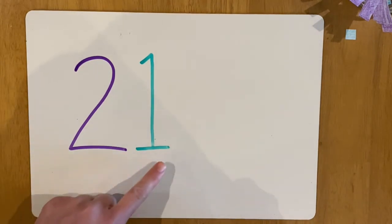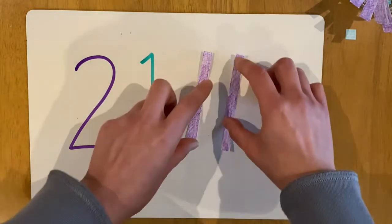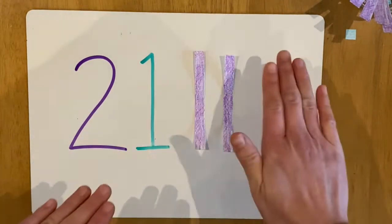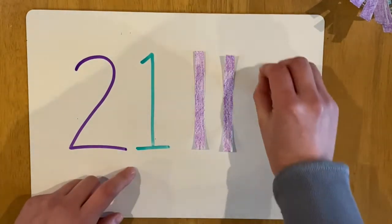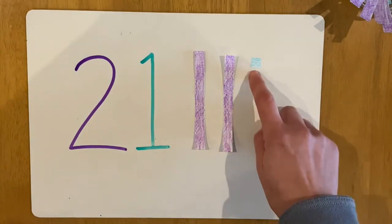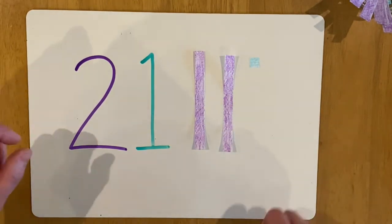So 21. We need 10, 20. So we need 2 tens and 1 one for 21. I hope you can see that little 1 there. It's a bit light. All right, do another number.